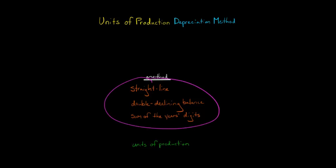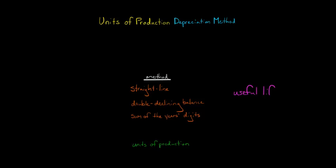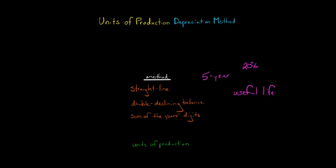All three of these methods have in common that we estimate the useful life of the asset. For example, if we're using straight line and we say it's going to be a five-year useful life, what we're essentially doing is each year recording some depreciation — whether the asset is used a lot, a little, or not at all. Each year we're taking 20% of the asset's value and recording it as depreciation.